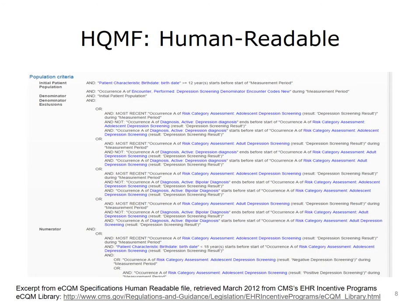Here we see a portion of the Human-Readable Health Quality Measures Format, HQMF, specification. The reader can see how Boolean logic applied to various data elements, differentiated by font color, and embedded QDM functions will produce desired results according to the measure's intent when applied to EHR data representing a specific patient population.